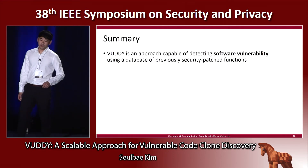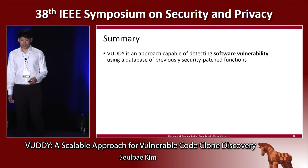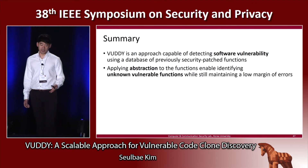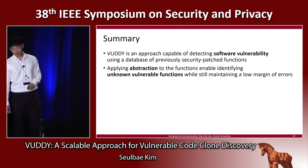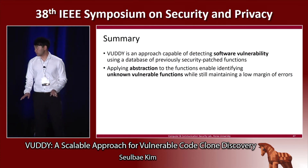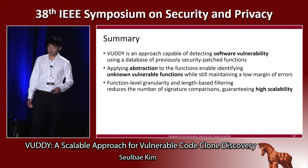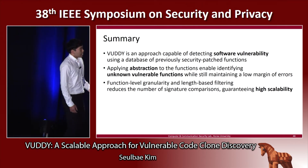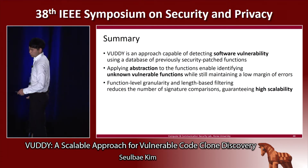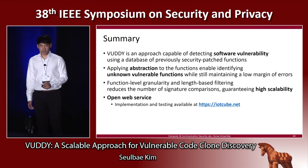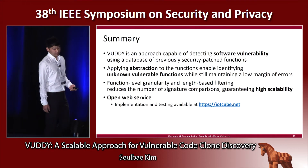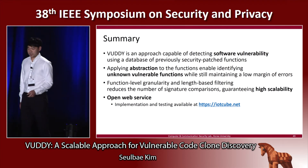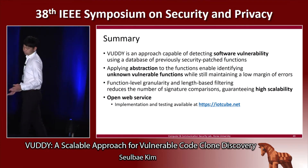In summary, VODY is an approach capable of detecting software vulnerabilities using a database of previously security-patched functions. Applying abstraction to functions enables identifying unknown vulnerable functions while maintaining a low margin of errors. VODY had a really low false positive rate. Function-level granularity and length-based filtering reduce the number of signature comparisons, guaranteeing high scalability — VODY could process 8.7 billion lines of code easily. It's also provided as an open web service; you can test our implementation at iotcube.net.